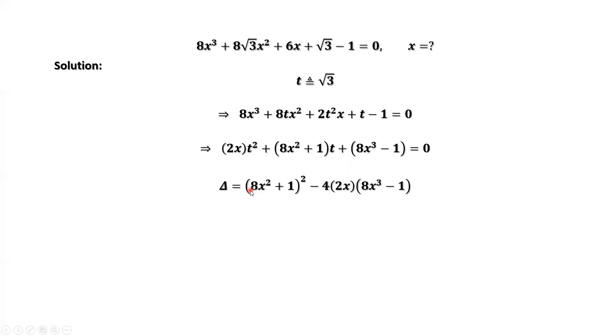The discriminant delta equals 8x squared plus 1 squared minus 4 times 2x times 8x cubed minus 1.